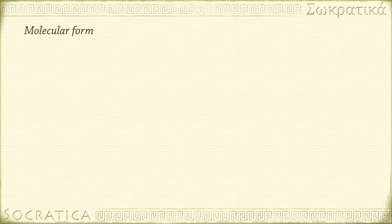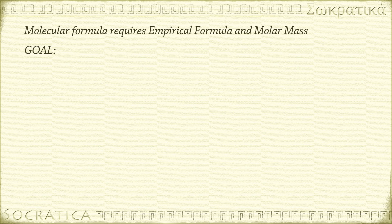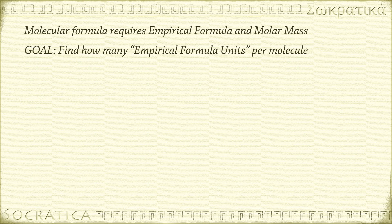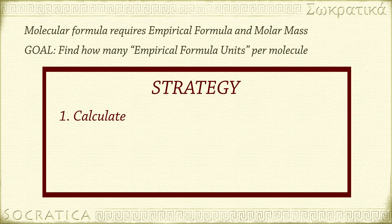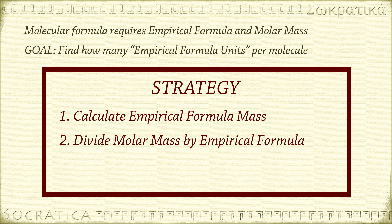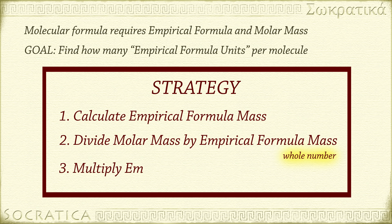To find the molecular formula of a compound, you need to have its empirical formula and its molar mass. The goal is to find out how many empirical formula units are in one molecule of the compound. Our strategy is: 1. Calculate the empirical formula mass. 2. Divide the molar mass by the empirical formula mass — this tells you how many empirical formula units are needed to form one molecule. This should be a whole number answer, or very close; if it isn't, you've made a mistake. 3. Multiply the empirical formula by this value.